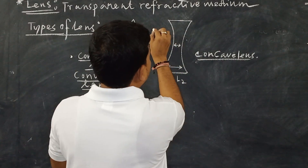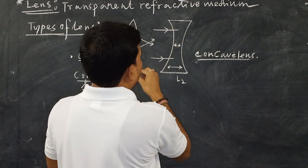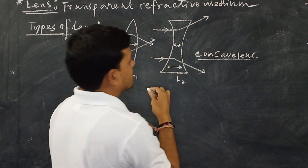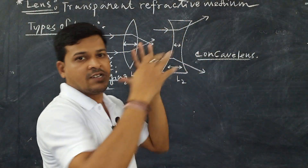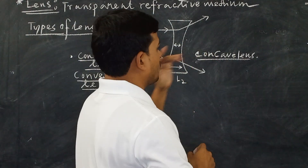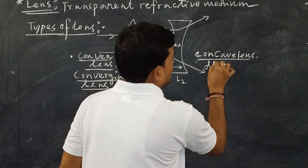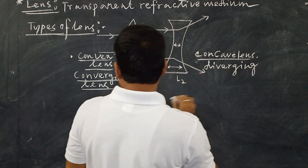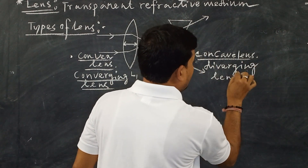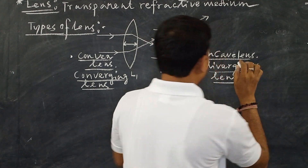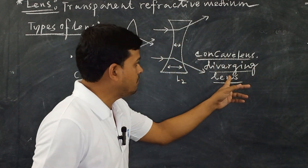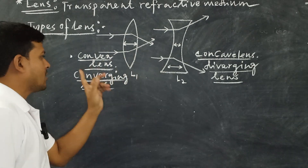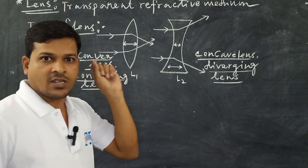Similarly, in the case of the concave lens, when light rays fall on it, after refraction the light rays diverge — it produces a divergent beam of light. That is why the concave lens is also called a diverging lens. In the next video, we will also learn why it produces a divergent beam after refraction.